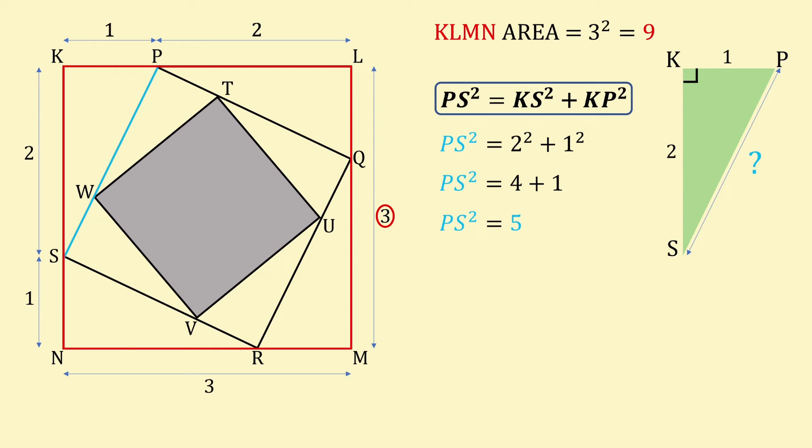Therefore, PS is equal to root 5. As PS is one side of the square highlighted in blue, we can square the root 5 to give 5 as the area of the medium sided square, PQRS.